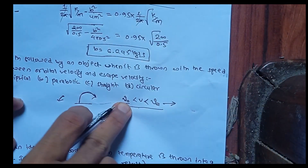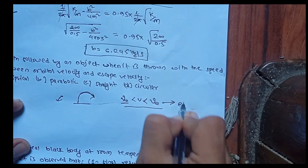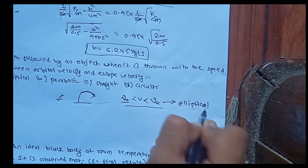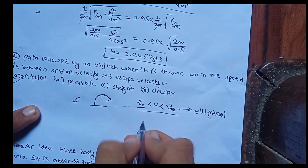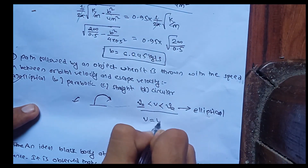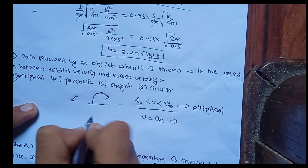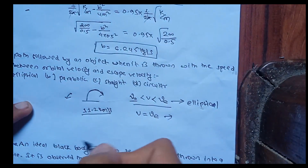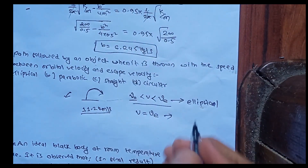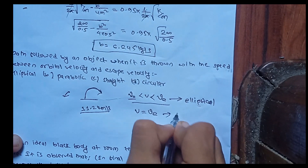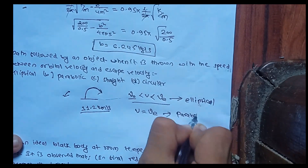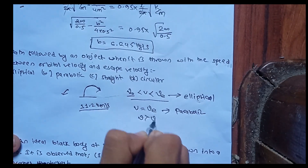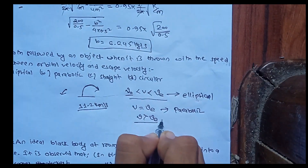The path is elliptical — that is the answer. When the velocity given is like 11.2 km per second (escape velocity), and an object is thrown with a velocity in that range, the path followed is elliptical. The answer is the elliptical path option.